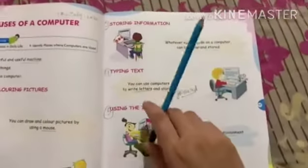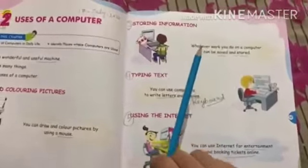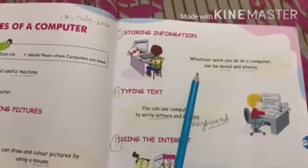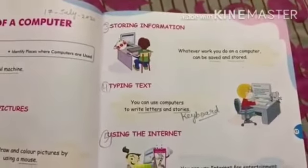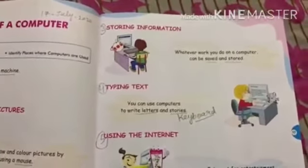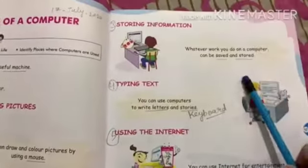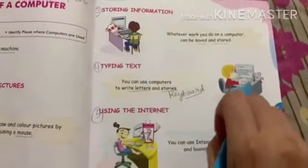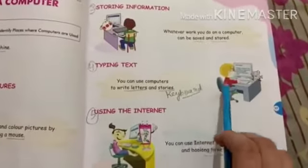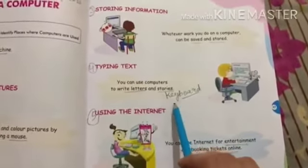There are many different types of games which you can play on the computer. The third use is storing information. The fourth point is typing text — you can type text on the computer, but you have to use the keyboard.